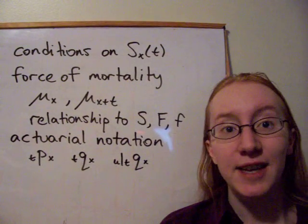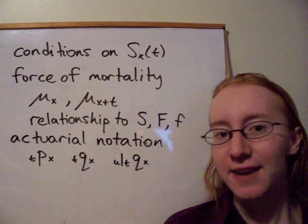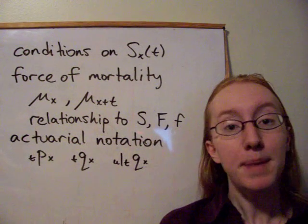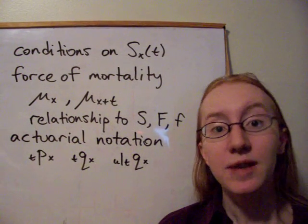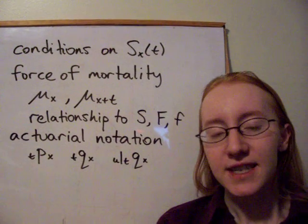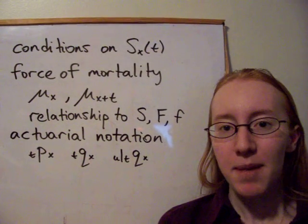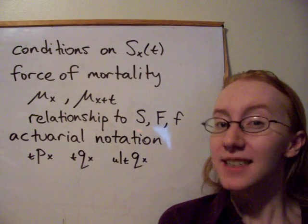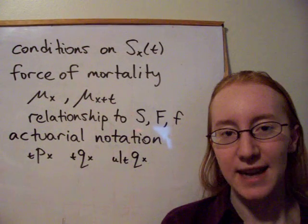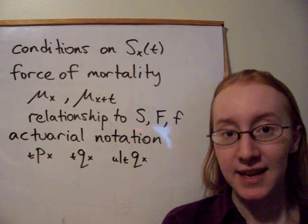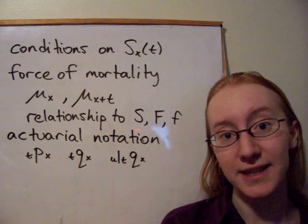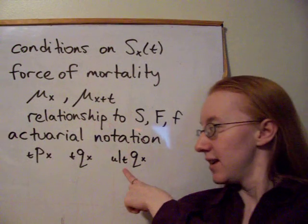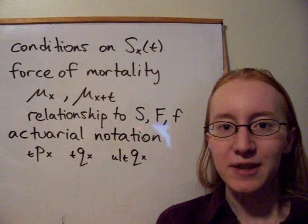The third notation is looking at a deferred probability of dying during a period of length t, starting with a life age x, but we're looking at this period u years into the future. So u-deferred tqx is really the probability that a life age x dies between u and t plus u years from now — in other words, they die between age x plus u and age x plus u plus t. We also looked at a number of ways to express this in terms of those other two actuarial notations.